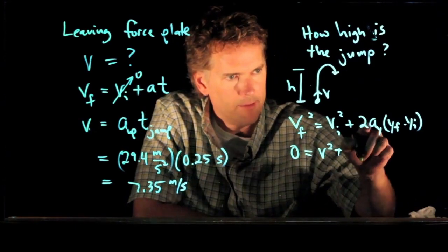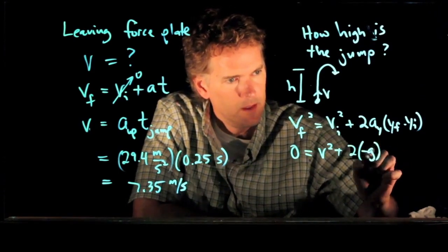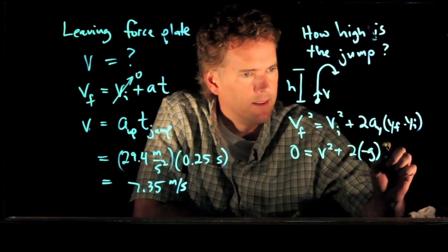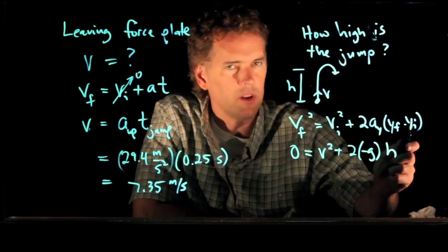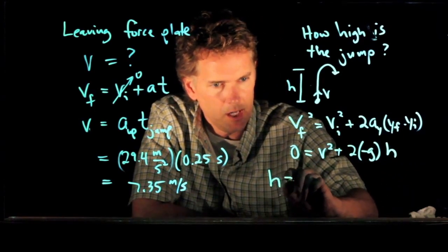And then we have acceleration due to gravity, which is negative G. And we have the height H. Y initial is 0, so Y final is just H. And now look, you can solve this very quickly for H.